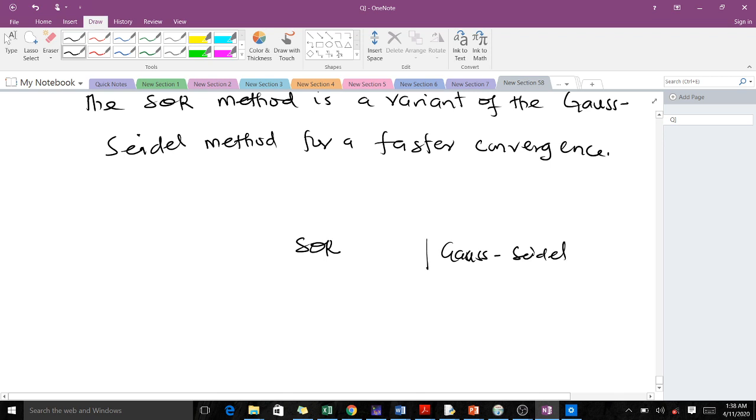When you impose a weight on the Gauss-Seidel, then we have the successive over relaxation. Because we impose this weight, normally we denote it omega, on the SOR, it makes the SOR faster than the Gauss-Seidel.